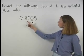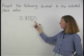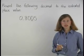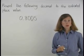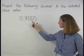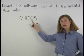To round 0.8005 to the indicated place value position, first find the digit in the rounding place, which in this case is the 0 in the thousandths place.